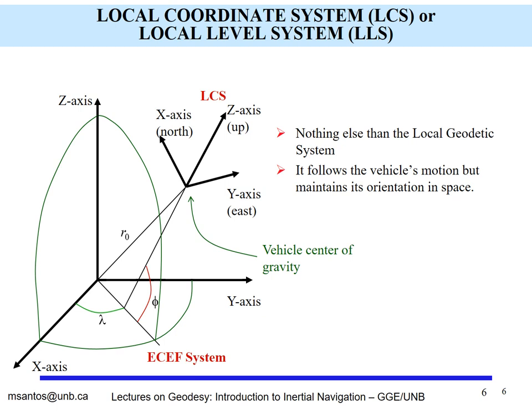Let us begin with the earth-centered, earth-fixed coordinate system — what we call the conventional terrestrial system. An example is the International Terrestrial Reference Frame. It is a system centered at the earth's center of mass, with the x and y-axes along the equator and the z-axis pointing towards the north celestial pole. At the surface we can define the local coordinate system, or local level system, which is the local geodetic system.